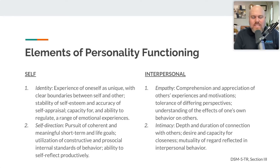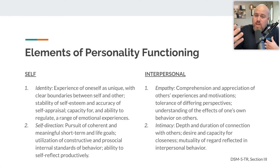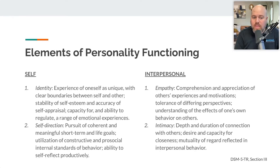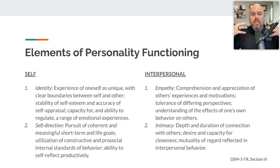An optimal functioning personality first of all has a sense of identity, meaning that you experience yourself as unique with clear boundaries between self and other. I know who I am — I'm similar to others but not entirely like them. There is stability of self-esteem and accuracy of self-appraisal, and a capacity to regulate a range of emotional experiences.